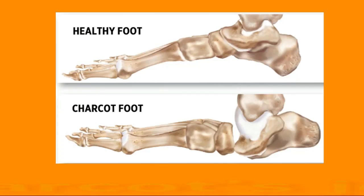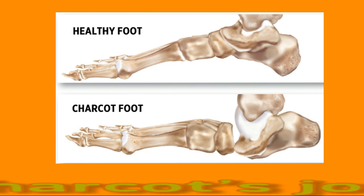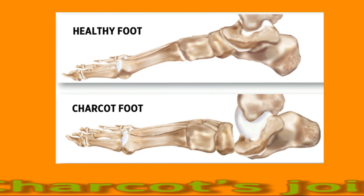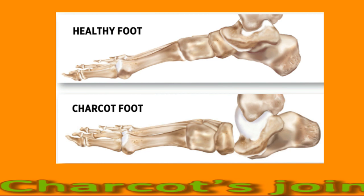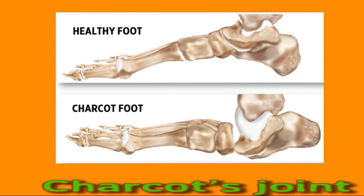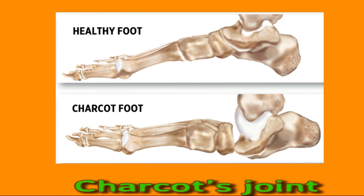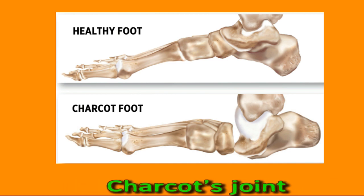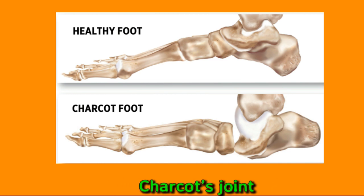Charcot's Joint, also called neuropathic arthropathy, results from nerve damage due to diabetes. The medical term for diabetes-related nerve damage is diabetic neuropathy. Diabetic neuropathy can cause numbness in the extremities, such as the feet and ankles. Over time, a person may feel little or no sensation in these areas. It can be easier to twist or break a foot without realizing the extent of the damage. Small breaks and sprains can put pressure on the joints of the foot. A reduction in blood supply and mechanical factors contribute to joint damage and physical deformities over time.